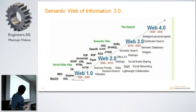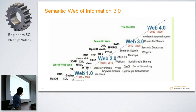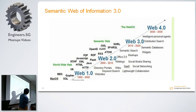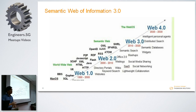You see very familiar names here. You have web 1.0 — HTTP, SQL, SOAP, XML. We have web 2.0 with Flash, JavaScript, Java. We are now moving on to web 3.0, with Sparkle and semantic databases. And we are moving towards web 4.0, in which there are more intelligent personal agents and distributed searches.